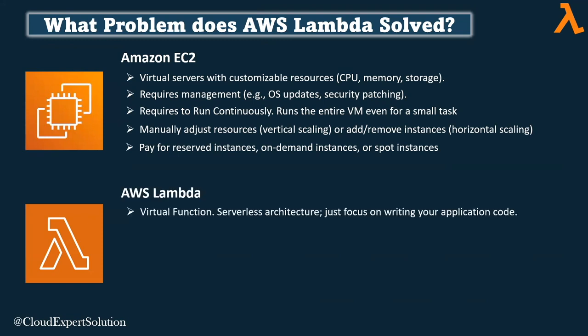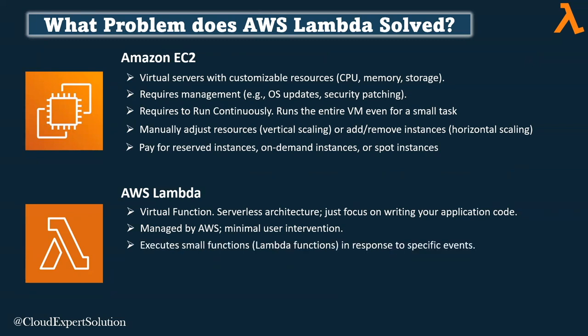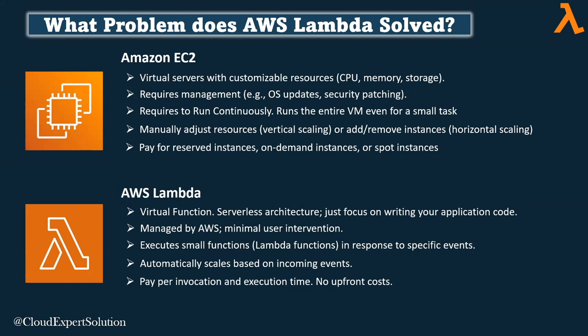In contrast, AWS Lambda is a virtual function with serverless architecture. You focus only on writing your application code rather than managing infrastructure. It is entirely managed by AWS, so there is minimal user intervention — AWS handles OS patching, security patching, scalability, and high availability. Lambda executes as a small function in response to specific events, scales automatically based on incoming events, and you pay per invocation and execution time with no upfront cost.